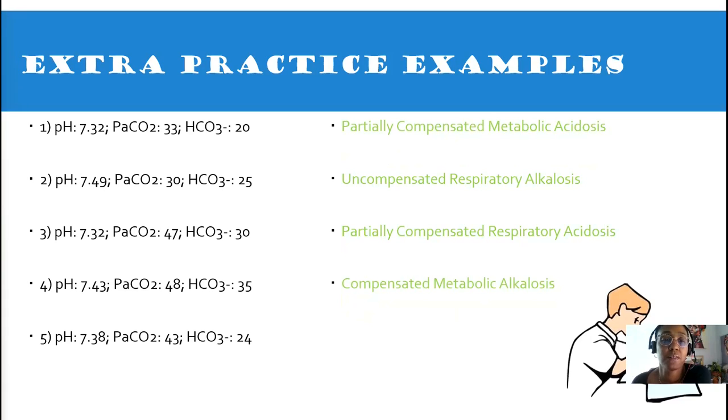Here's our last one. pH is 7.38. CO2 is 43. And, bicarb is 24. That is a normal ABG. Like you and me, no imbalance.